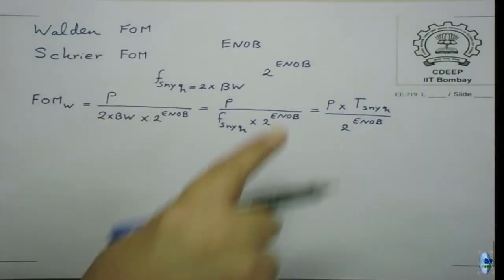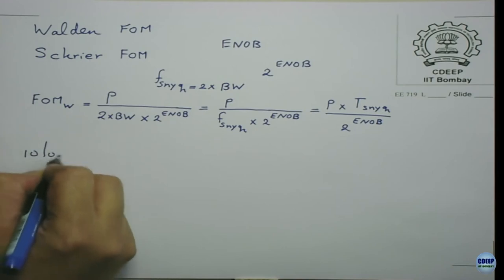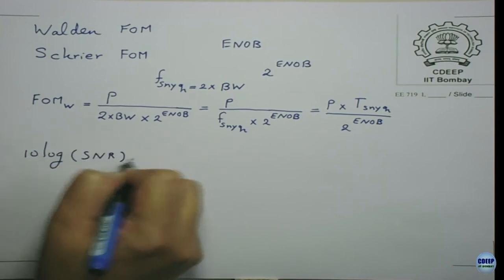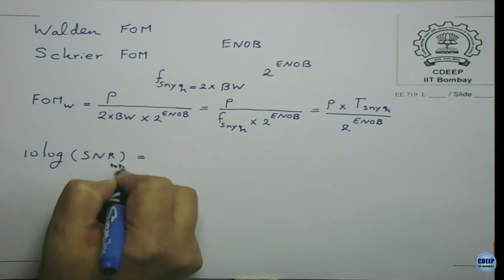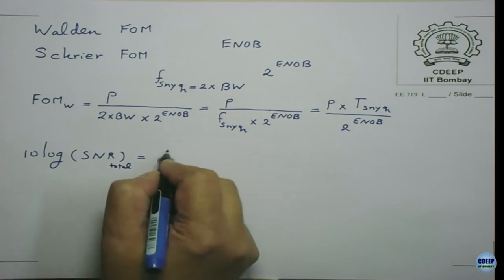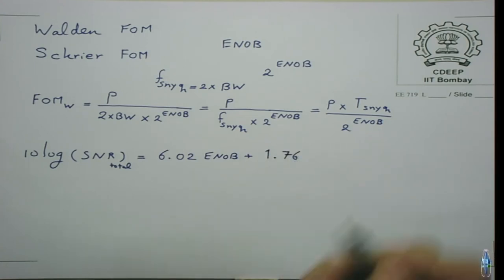That's why Schreier defined another figure of merit. It starts from the same relation: SNDR = 6.02·ENOB + 1.76 dB for a single-tone sine wave input. This means SNR is proportional to 4^ENOB (from the 6.02·n term being 10·log(4^n)). Schreier looks directly at SNR as a measure of dynamic range, since these days noise floor matters — supply scaling means we are hitting the noise floor.